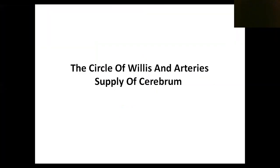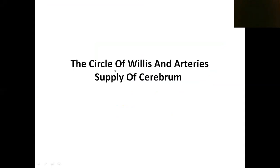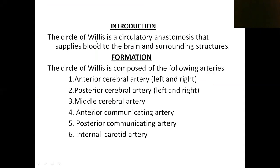Dear students, today we are going to discuss about the Circle of Willis and arteries of the cerebral. First of all, we will see what is meant by Circle of Willis. Circle of Willis is nothing but a circle formed by some arteries that supplies to the brain and surrounding structures. So Circle of Willis means an arterial circle formed by some arteries, and its importance is that it supplies to the brain and surrounding structures.